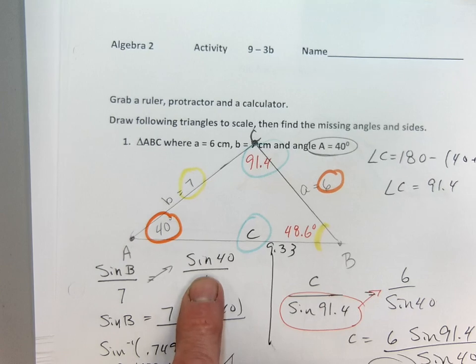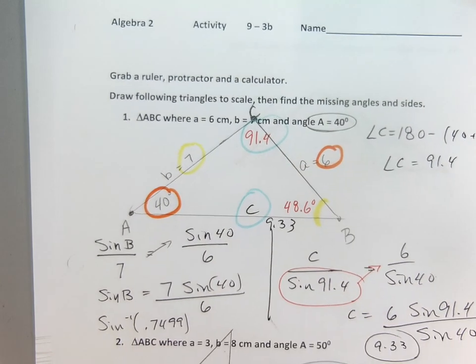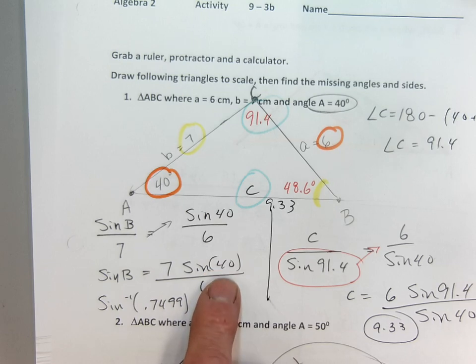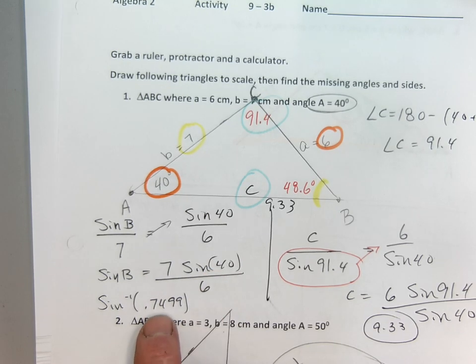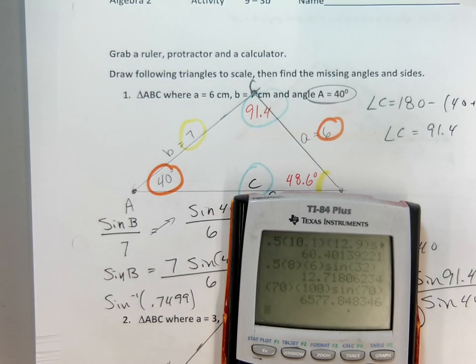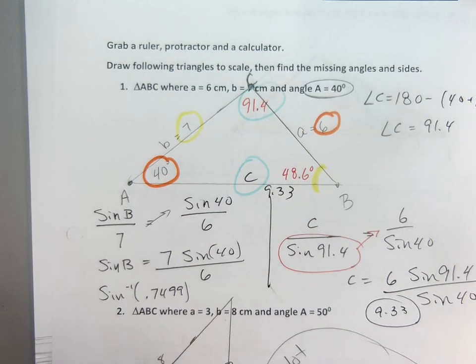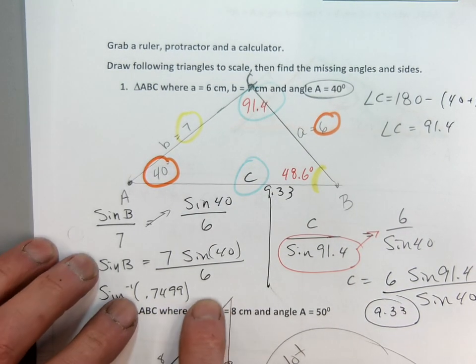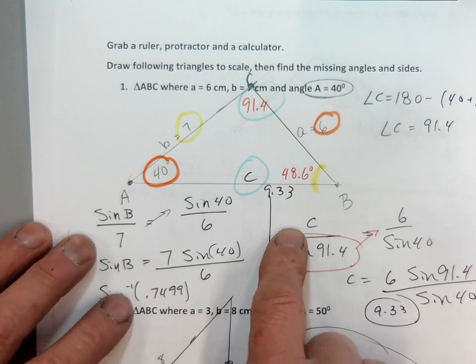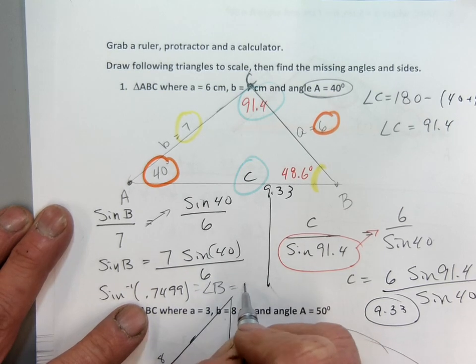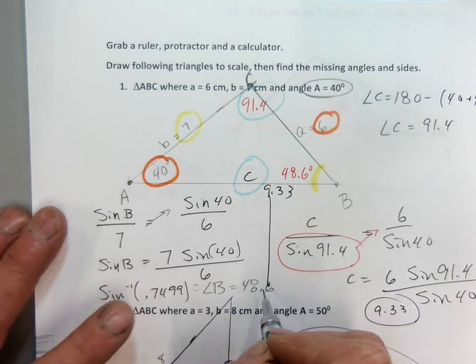I multiplied up the seven on my calculator. I went seven sine of 40 divided by six. I got a decimal in my calculator. I got a decimal. I sine inverse that and I got an answer of about 48.6. So angle B turned out to be about 48.6 on my calculator.